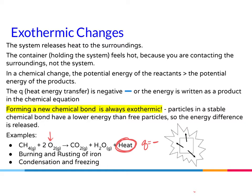Forming new chemical bonds is always exothermic. The new bonds become more stable than the reactant side, and therefore release that energy. Some examples are burning and rusting of iron, and also condensation and freezing. As something goes from a gas to a liquid, particles have less average kinetic energy and release that energy. The same as going from a liquid to a solid — energy is released there as well.